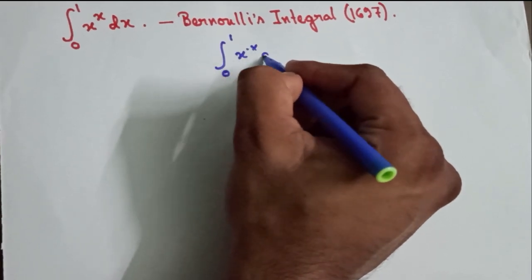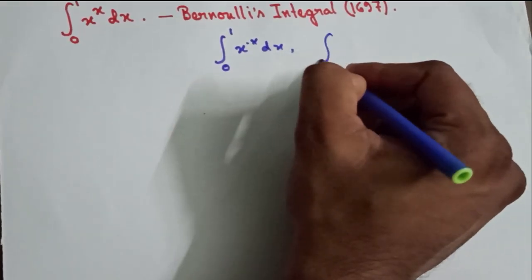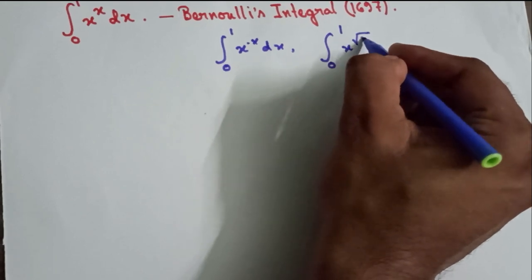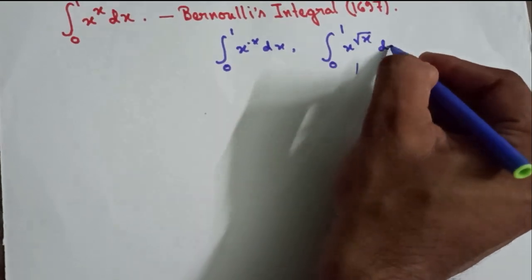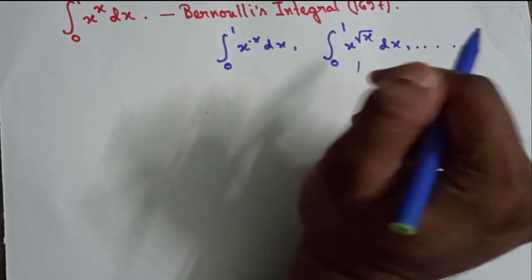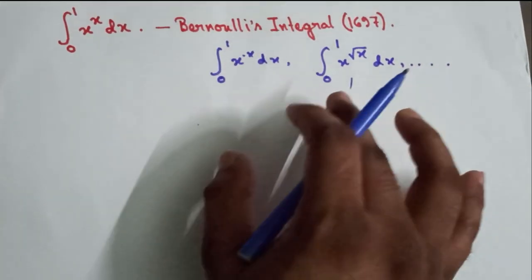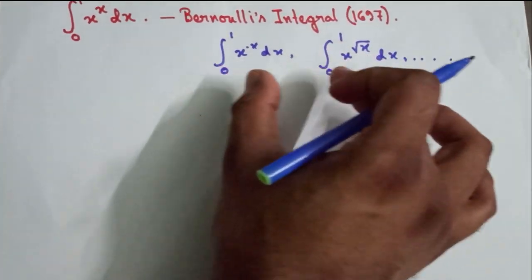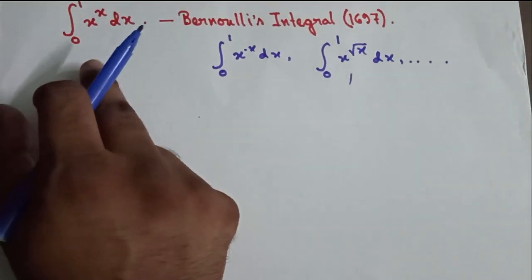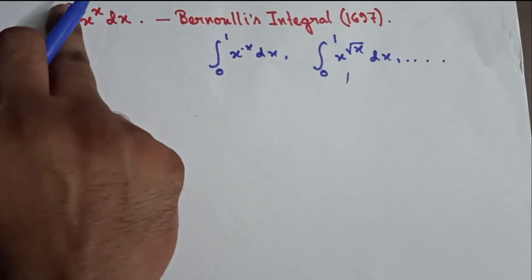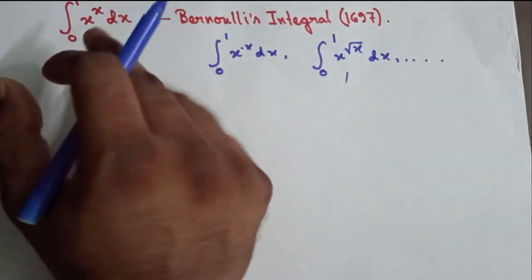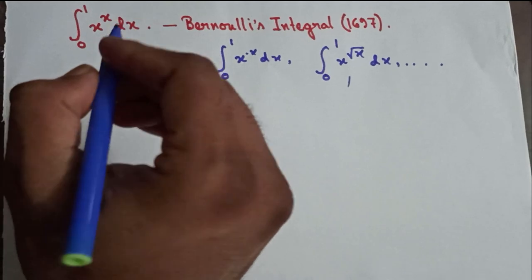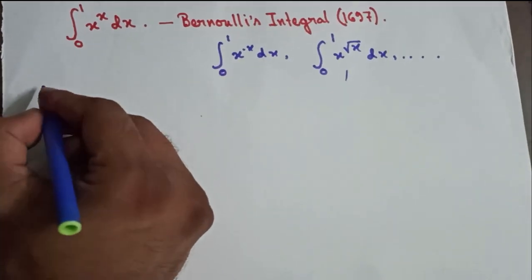Bernoulli's integral can give rise to its cousins, like the integral from 0 to 1 of x^(−x) dx, or 0 to 1 of x^(√x) dx, and so many others. Rather than solving them one by one, we can derive a generalized formula for this type of integral and then solve any of them.